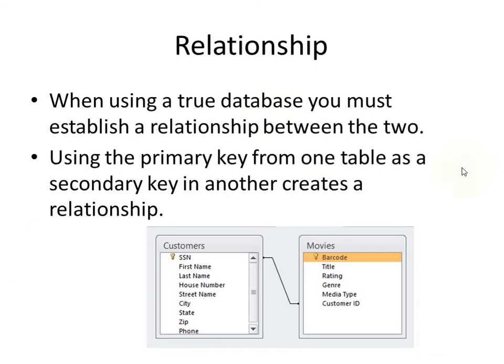By connecting these tables together, you then establish a relationship. When you use the primary key from one table as a secondary key in another table, it creates this relationship. So if you can see right down here, we've got social security number connected to the customer ID field of the other table — those connected makes a relationship.